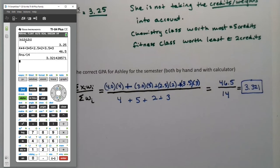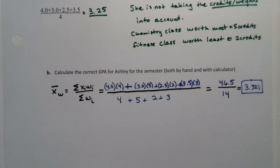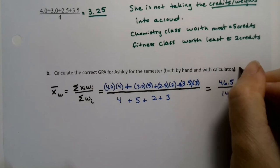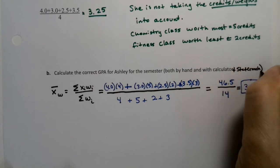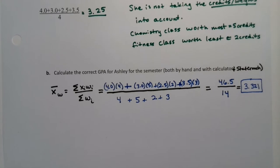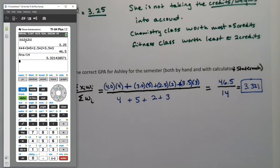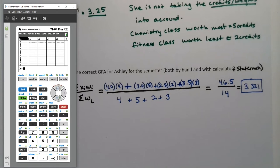How do we get it from StatCrunch and the calculator? I'm going to show you StatCrunch as well. Calculator first: stat edit. I want to clear out this old data here. I went up to L1 and pressed clear enter. That clears it out. Then I tell it the grades. I'm going to put the grades in this column: 4, 3, 2.5, and 3.5.